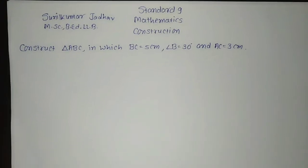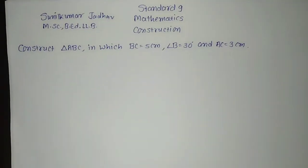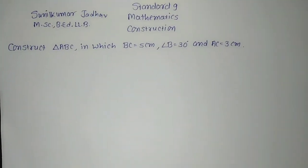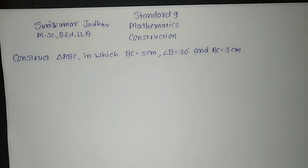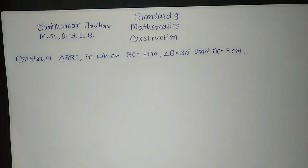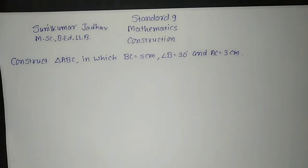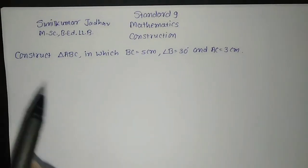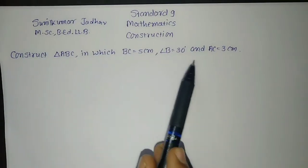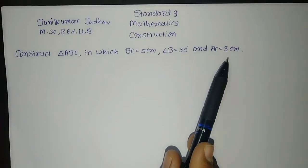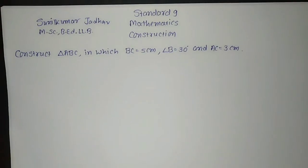This is a question asked by one of my viewers. The original question asked to construct triangle ABC in which BC equal to 5cm, angle B equal to 30°, and AB is equal to AC is equal to 3 centimeter, but that is not possible.